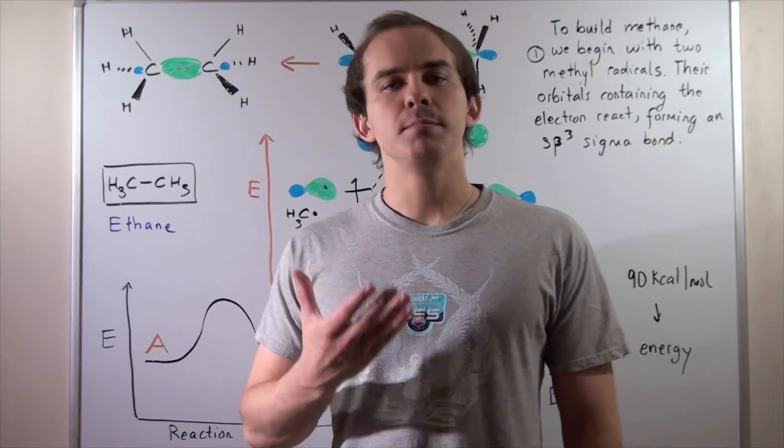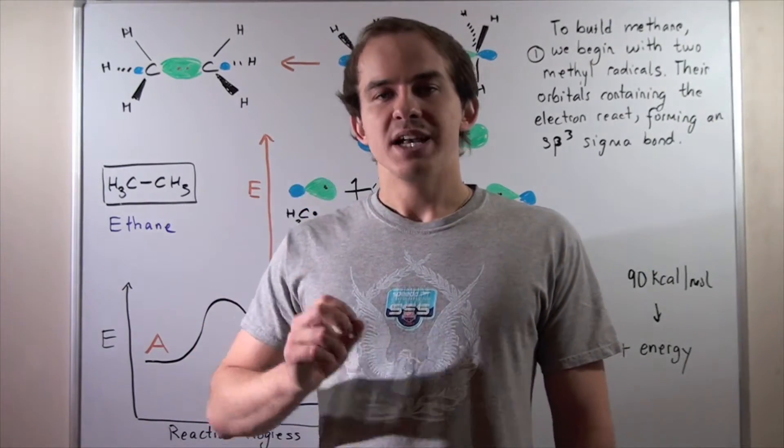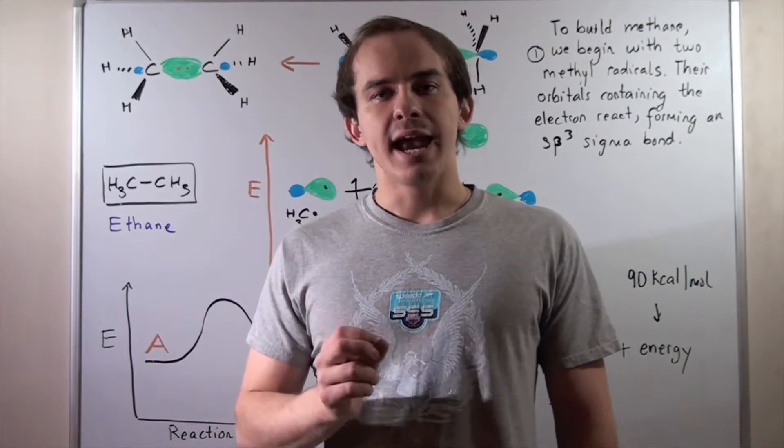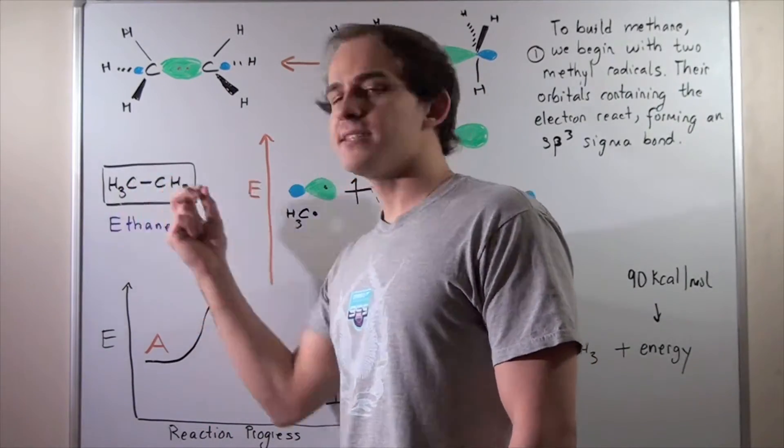Now, in this lecture, we're going to build an ethane molecule from two methane molecules. Now, ethane is an alkane. It's composed of two carbons and a total of six H atoms.